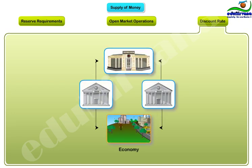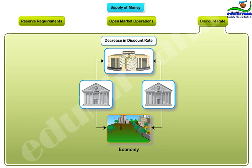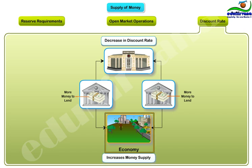The third tool is the discount rate — the interest rate on loans that the central bank makes to banks. When the central bank decreases the discount rate, the banking system borrows more from the central bank and therefore has more money than before. This additional money can be lent onwards, so a decreased discount rate increases money supply in the economy.